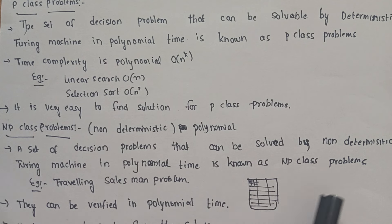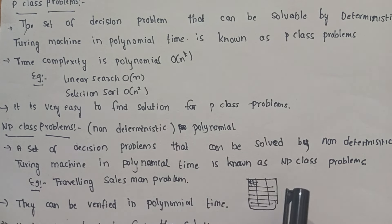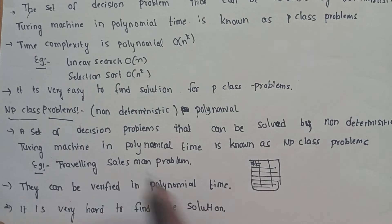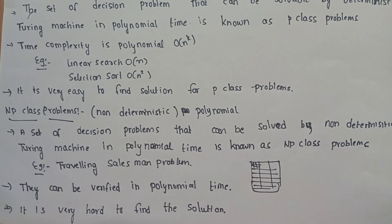NP class problems are hard to find a solution for, but it is easy to verify the solution. Finding a solution requires a non-deterministic algorithm, and it is hard. Once you find a solution, it is very easy to verify it. They can be verified in polynomial time. It is very hard to find a solution for NP class problems.